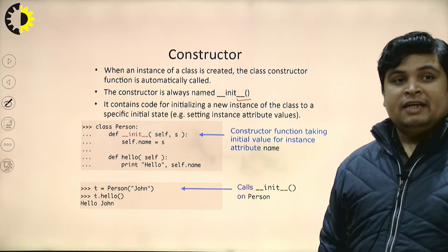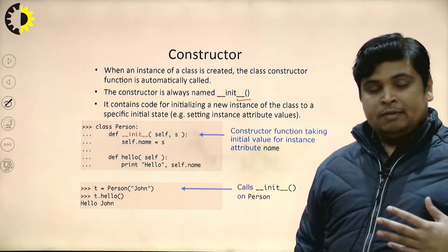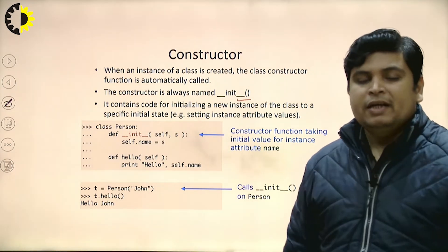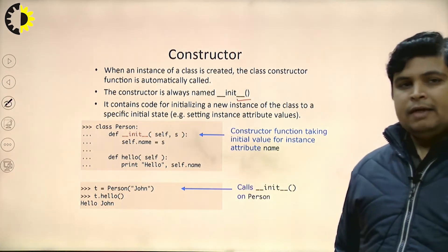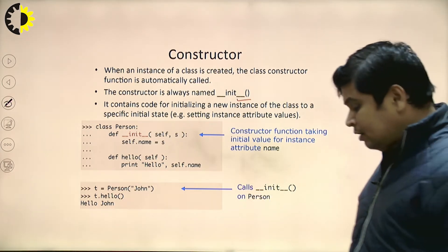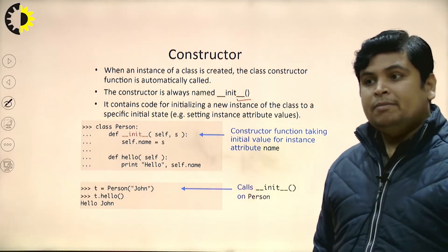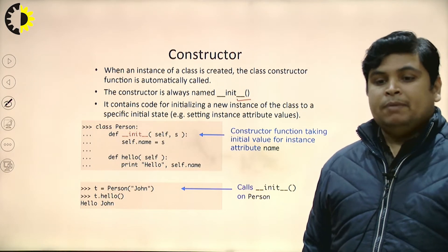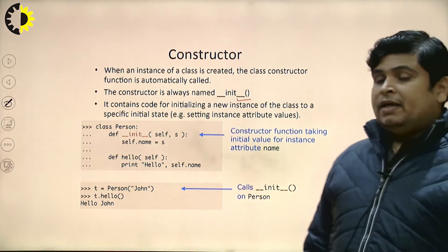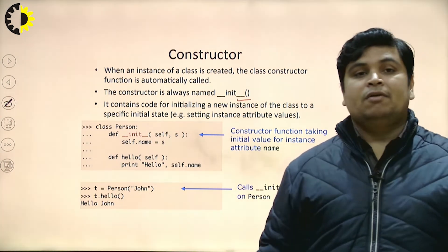Initial state means setting instance attribute values. Suppose I am a customer and I need to open a new saving account at a particular bank — B.O.B., State Bank of India, etc. But when you go to the bank, they open one account and immediately my registration form is filled. When my name is moved to the bank server, immediately I am treated as an object of a particular server.